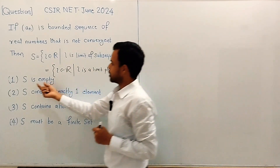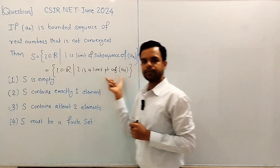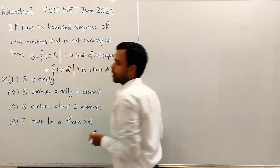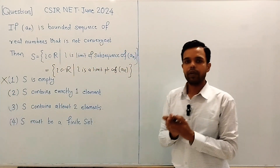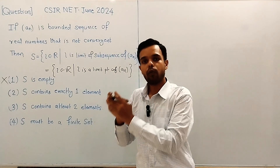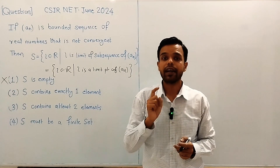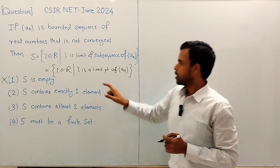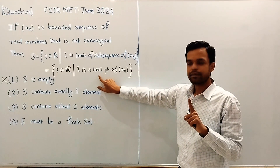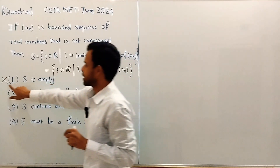Let us discuss option one: is S the empty set? Clearly no, because by the Bolzano-Weierstrass theorem for sequences, a bounded sequence of real numbers must have at least one limit point. So S must contain at least one member, meaning S cannot be empty. Option one is discarded.